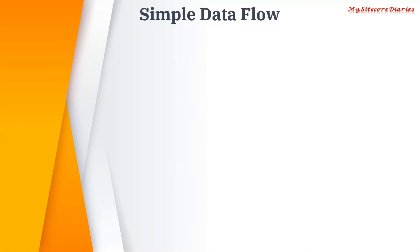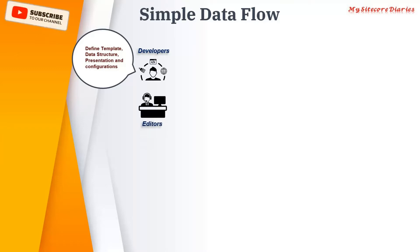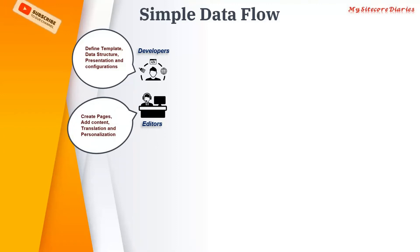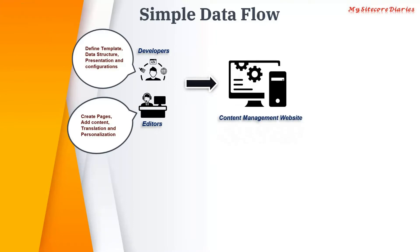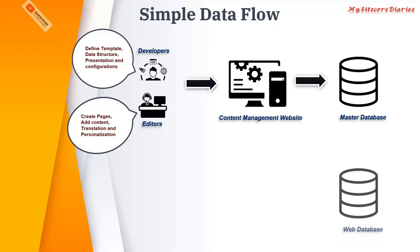Let us first see how data flows inside Sitecore. Developers create templates which have a data structure, they create a presentation on items and provide the configuration. Editors create pages, add content, do translations, and apply personalization. All these activities are done on the content management website. The content management website stores data into the master database, which is why master database is called an in-progress database — all unpublished data is stored there.